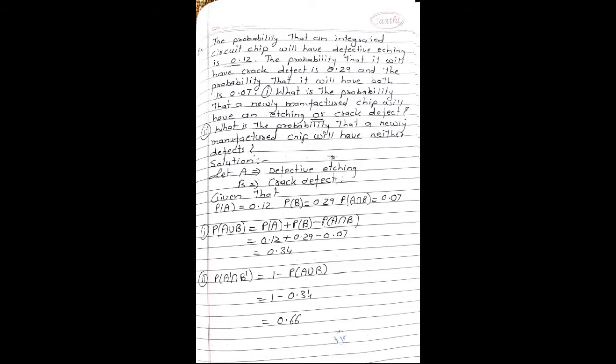First step is to define events. Let A denote the event of defective etching and B be the event that the chip has a crack defect. Given that probability of A is 0.12, probability of B is 0.29, and probability of A intersection B is 0.07.